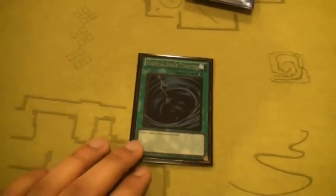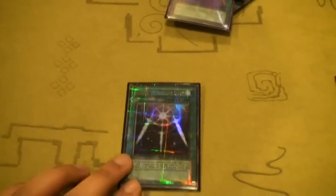I got Mystical Space Typhoon, obviously. Swords of Revealing Light, to stall, parallel rare, that's why it looks weird like that on camera.